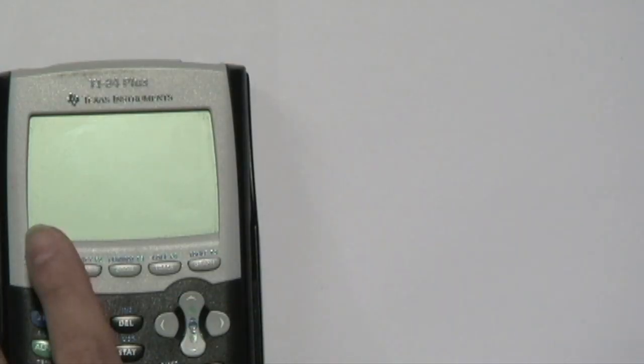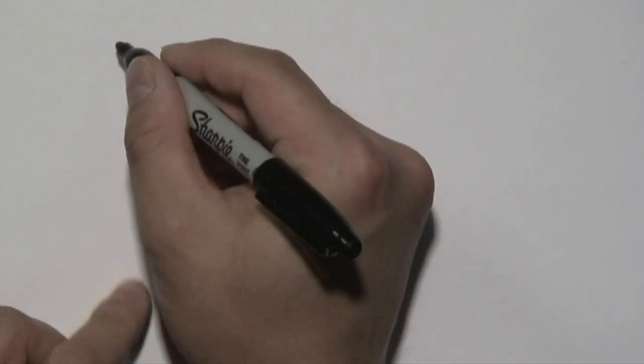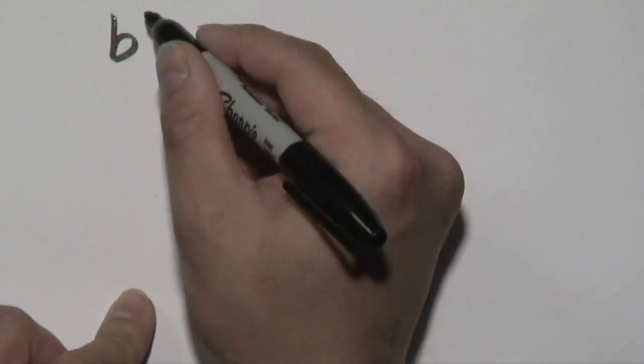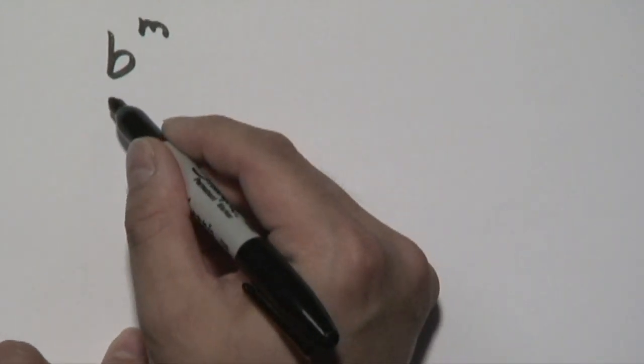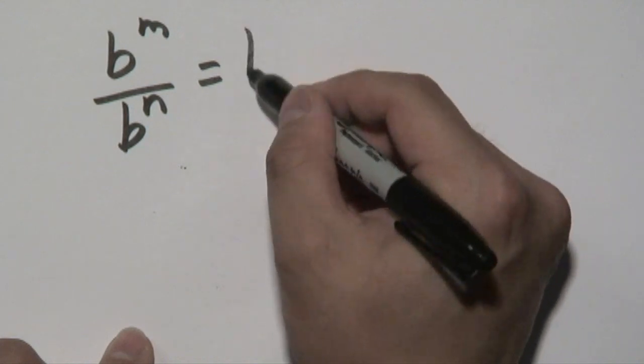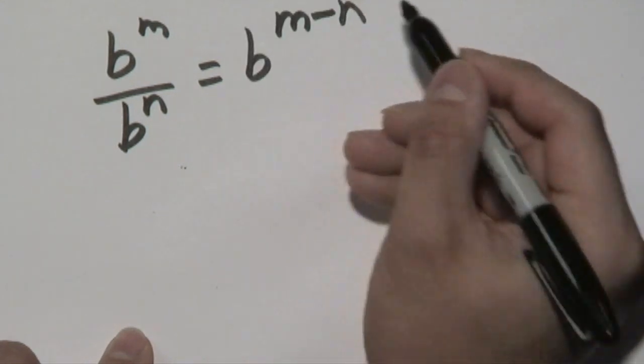Now the one rule that we'll be using primarily is this particular one: b to the m over b to the n is equal to b to the m minus n.